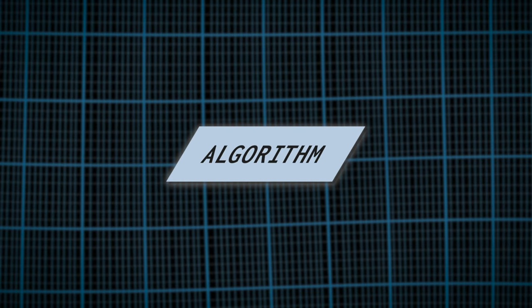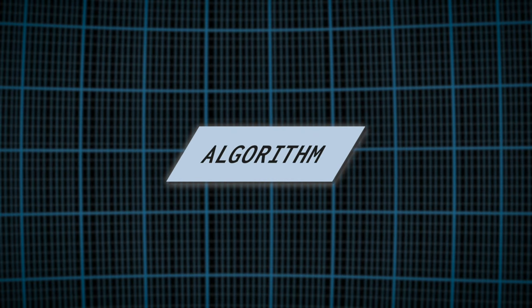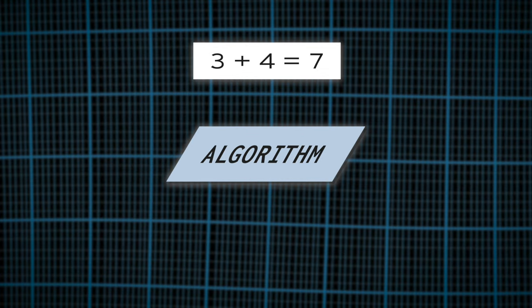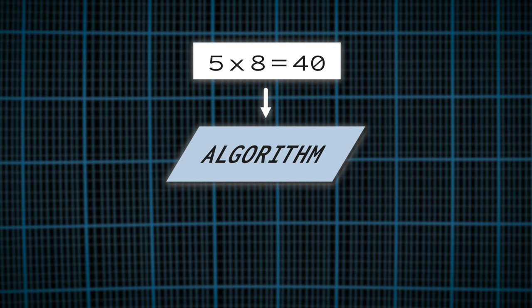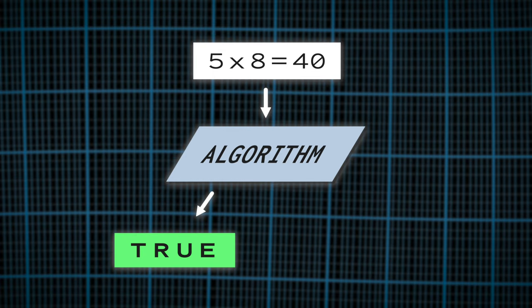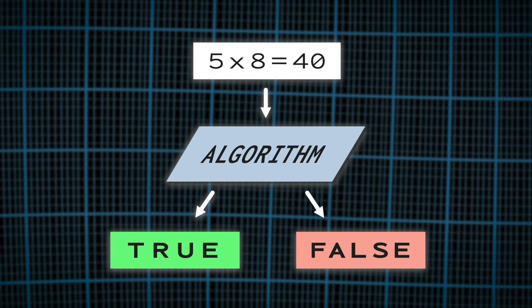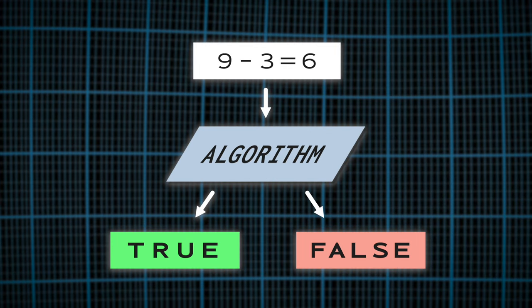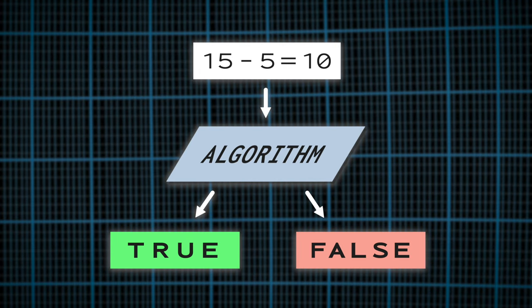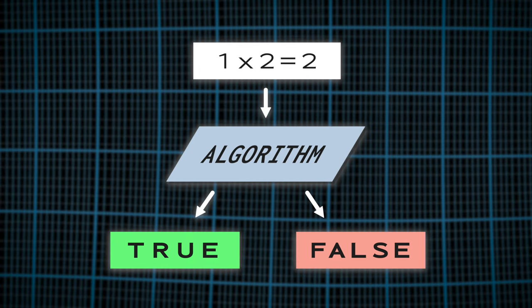Consider the formal system of arithmetic. The decision problem for this system would be to determine whether there exists an algorithm that can take any statement in the system — such as '3 plus 4 equals 7' or '5 times 8 equals 40' — and determine if it is true or false. In other words, the decision problem is asking if there is a way to always know if the answer is correct or not, no matter what math problem it's given.